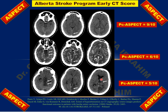This is the manner in which we calculate the PC-ASPECTS score according to the posterior circulation segments — similar in principle to the anterior or middle cerebral artery ASPECTS score.